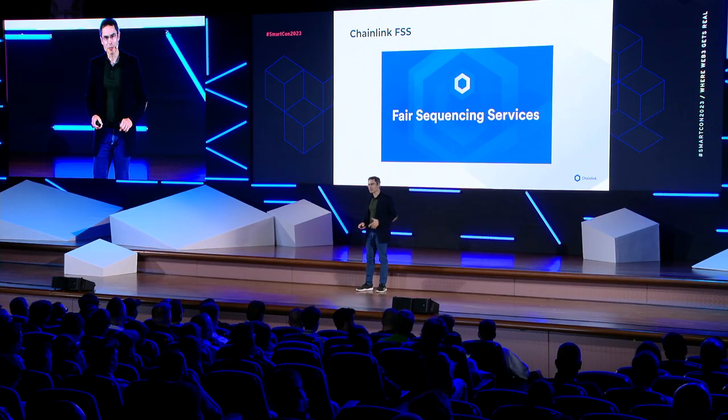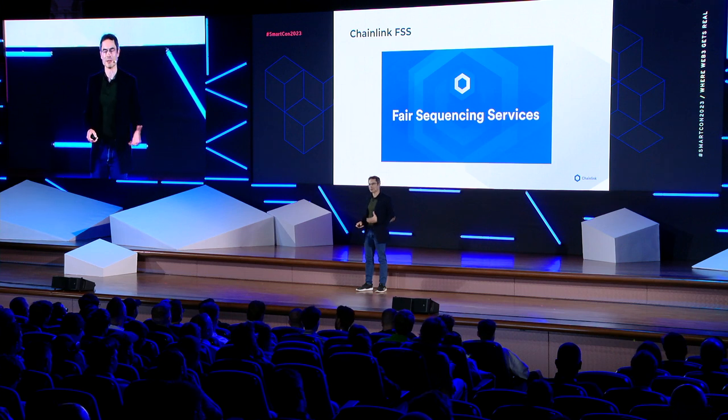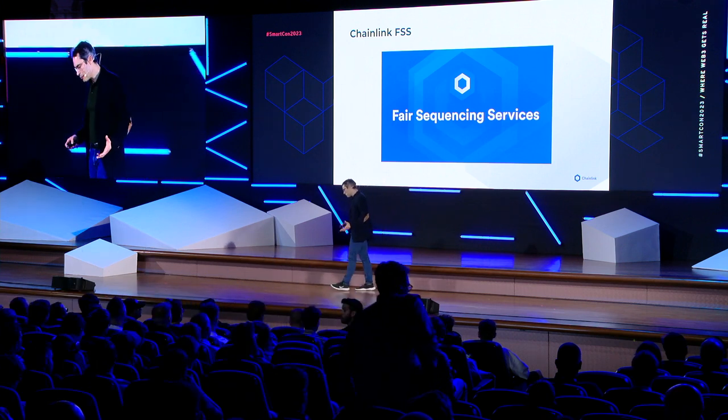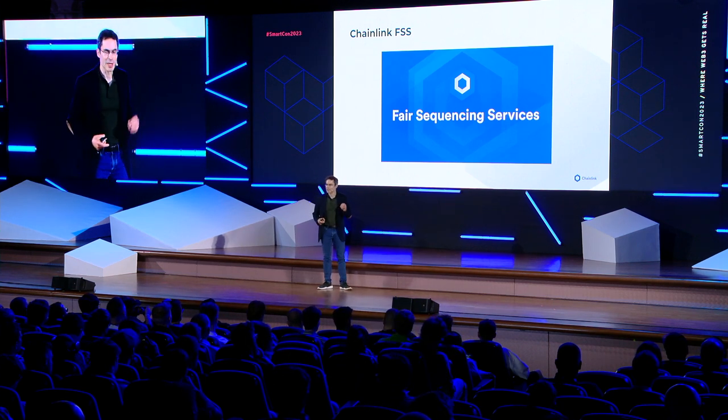Good morning. At last year's Smartgon, I talked about a tool we're building at Chainlink called Fair Sequencing Services. It's designed to protect user transactions against exploitation, in particular a type of manipulation that involves changing the sequencing of transactions, or to protect against what's called MEV, which I'll explain in a moment. Today, I'm going to explain to you why Fair Sequencing Services doesn't work. In fact, I'm going to give you a kind of argument or informal proof that shows that it can't work. But don't worry, that's not the end of the story.